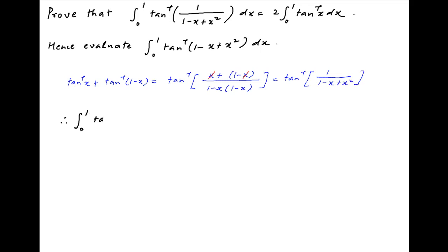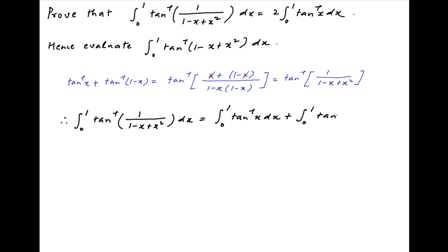Therefore, the integral from 0 to 1 of tan inverse of 1 upon (1 minus x plus x squared) dx is equal to the integral of tan inverse x dx plus the integral of tan inverse (1 minus x) dx, with limits of integration 0 and 1. Now, recall a property of definite integrals: the integral from 0 to a of h(x) dx is equal to the integral from 0 to a of h(a minus x) dx.